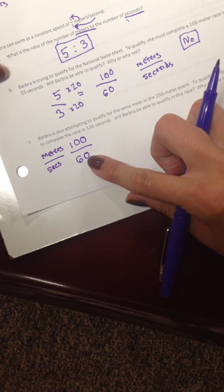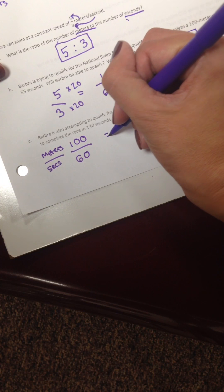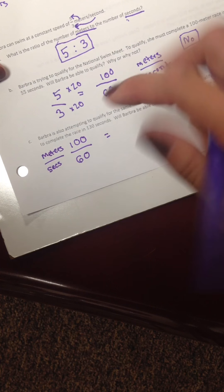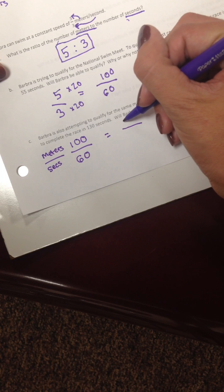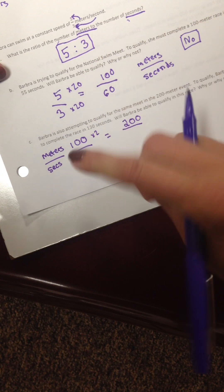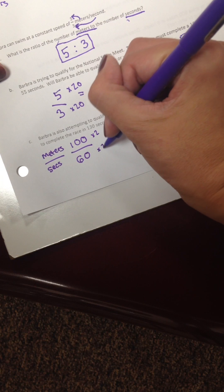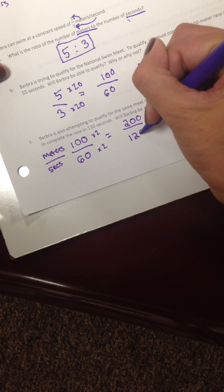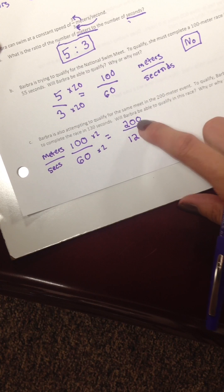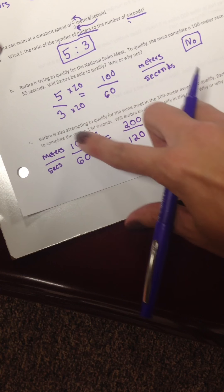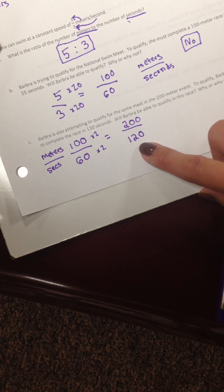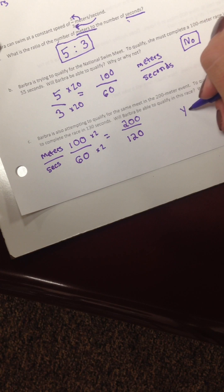100 meters in 60 seconds. So how would we get to 200 meters? Well that's times 2. So 60 times 2 is 120. So we're saying it takes her 120 seconds to swim 200 meters. She would need to qualify by swimming it in 130 seconds. Well, 120 seconds is faster. So yes, she'd qualify for that.